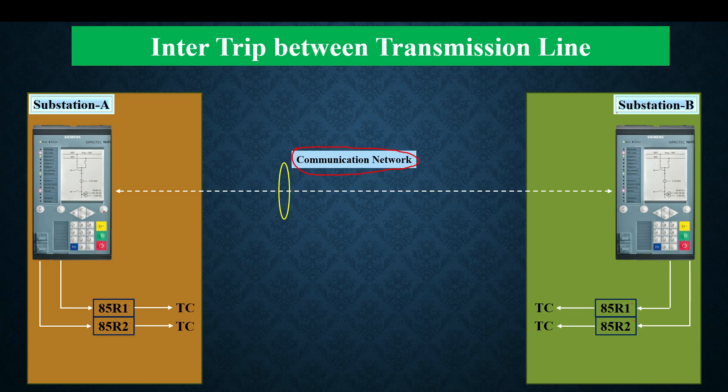The most important thing to know about inter trip is that on receiving an inter trip signal, the relay will not check any other condition. If substation A receives an inter trip from substation B, without seeing any condition it will directly operate either 85R1 or 85R2, and the circuit breaker will trip.